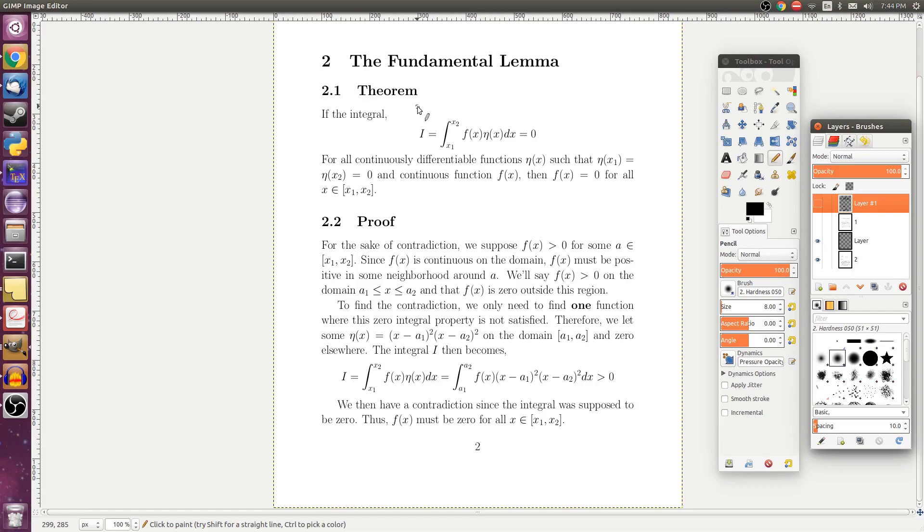So the theorem states that if some integral i from x1 to x2 of f of x times eta of x dx is equal to zero for any continuously differentiable function eta, such that eta of x1 and eta of x2 is zero, and continuous function f of x, then f of x has to be zero for all x in that region.